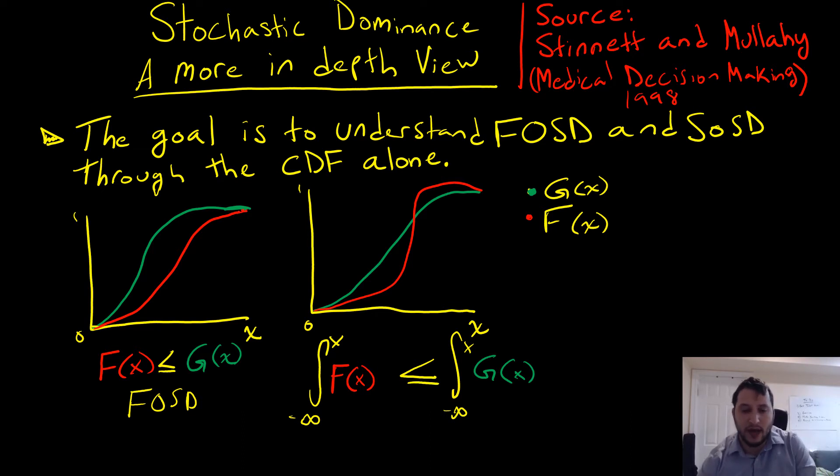For second order stochastic dominance, which we have in our right-hand side picture, the area under F is going to be smaller than that of G even though these curves may cross. Practically speaking, what does that mean? It means that the outcomes under F are more likely compared to that of G.